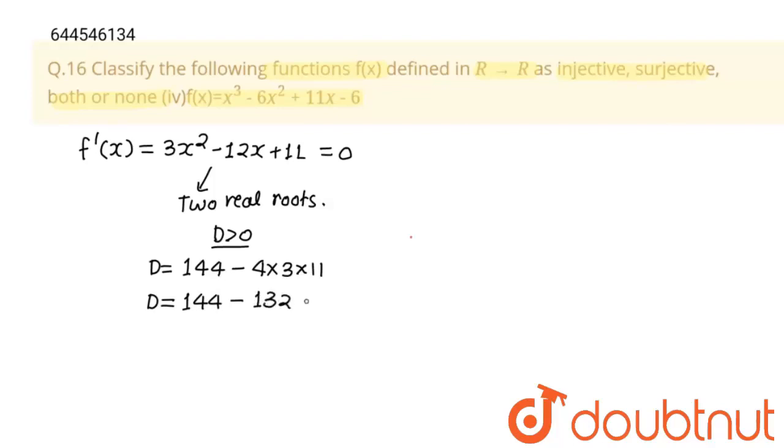12. So D is positive, which means that this has two real roots, which also means the value of f'(x) is equal to 0 at two points, which means that this curve will have maxima and minima both. Curve will have minima and maxima, then this is not injective.